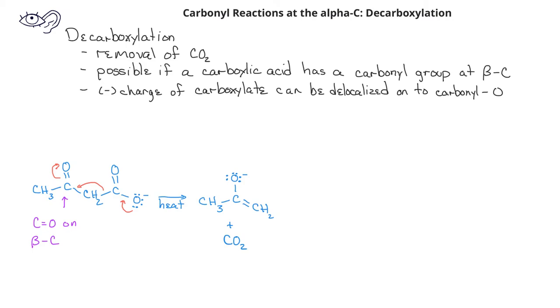Decarboxylation is usually done in the presence of heat, and if we have a little acid present at the end we will form the ketone as a result of the decarboxylation of the carboxylic acid.